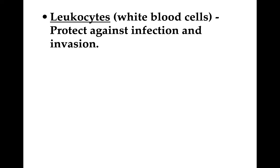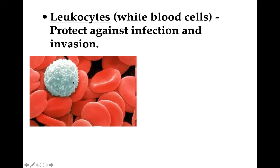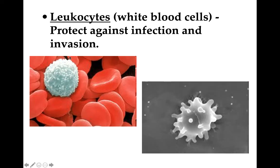The next type of blood cell is the leukocyte, or white blood cell. Leukocytes are a little larger than red blood cells and generally more circular. They protect against infection and have several different roles in the immune system — they are key to it. Importantly, leukocytes do have a nucleus, and when we test blood for DNA in forensics, it is from the white blood cells that we obtain that DNA.